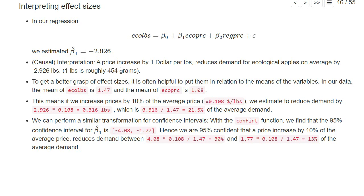To get a better grasp of effect sizes, it's often helpful to put them in relation to the means of the variables. In our data, the mean of the demand for ecological apples is 1.47 pounds, and the mean of the offered price is 1.08 dollars.